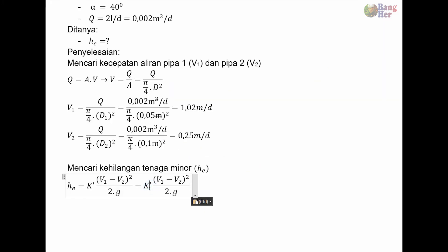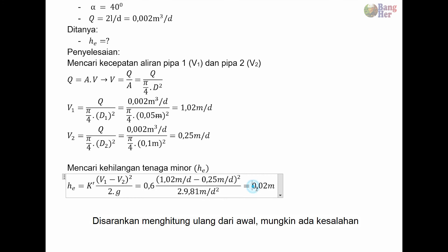Sehingga kalau kita input nilainya, K adalah 0,6. V1 adalah 1,02 meter per detik. V2 adalah 0,25 meter per detik, dikuadratkan. Percepatan gravitasi adalah 9,81 meter per detik kuadrat. Ini semua kalau dihitung, maka akan diperoleh HE sebesar 0,02 meter pembulatan.